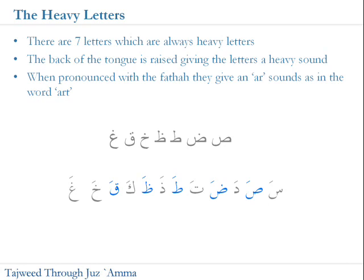Let's go through the pairs. We've got the sa and the sad, the da and the dad, the ta and the ta, the da and the dha, and the ka and the qaf. Then we've got the ha and lastly the ghain.